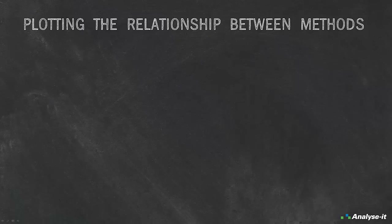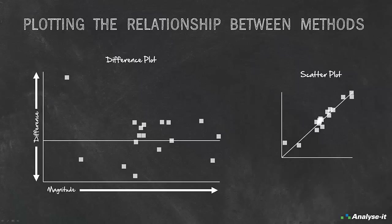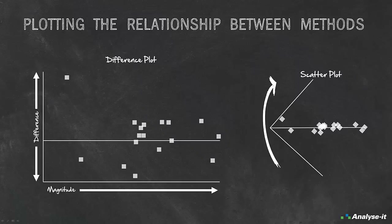First let's look at plotting the relationship between methods. When assessing the agreement between two methods, it's useful to plot the difference between methods against the mean of the methods — a difference plot. A difference plot is effectively a scatter plot rotated 45 degrees clockwise, and is more informative since the data points are not tightly clustered around the diagonal. A difference plot also clearly shows any relationship between the differences and the magnitude of measurement.